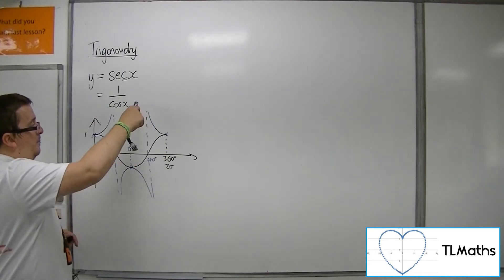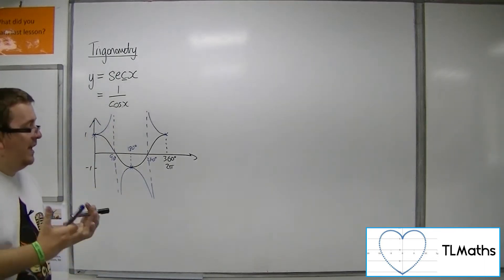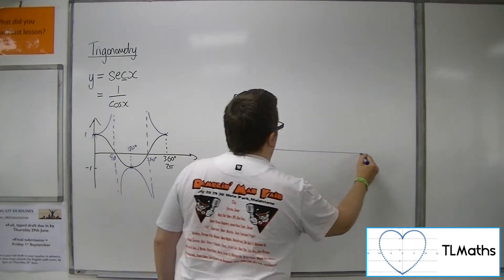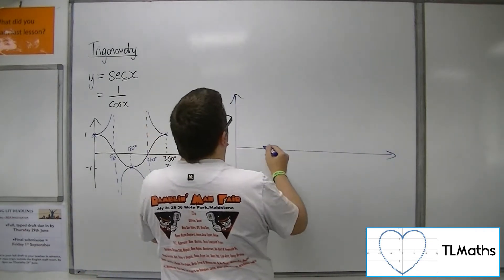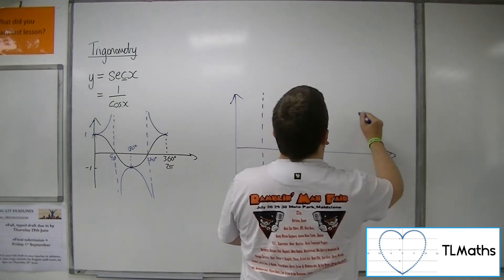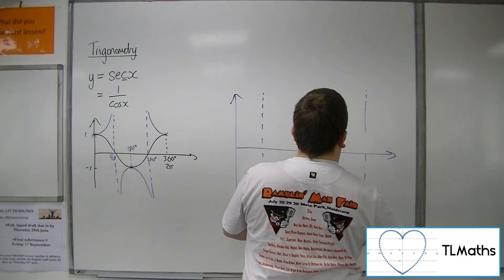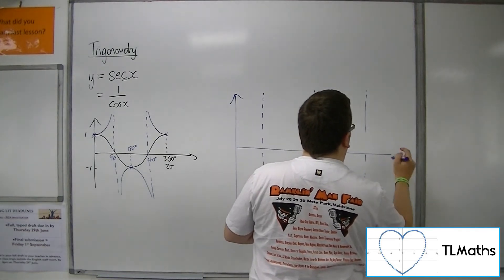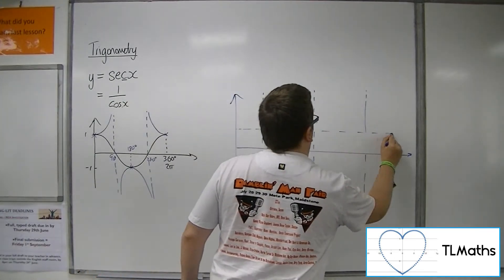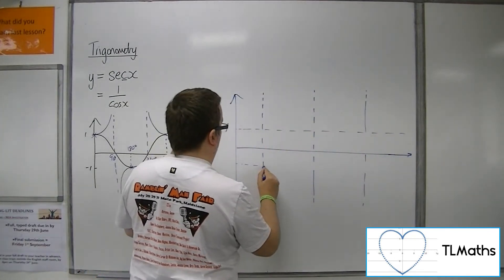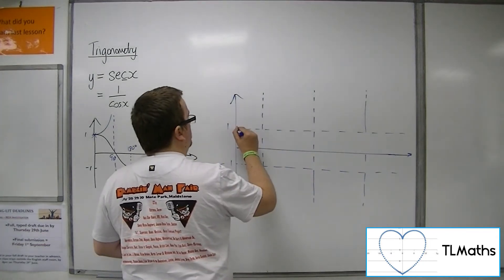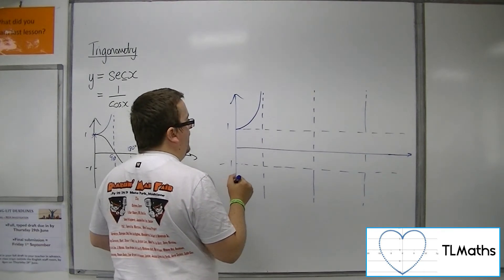The blue parts are what sec actually looks like. If we do sec from scratch, we're looking at something that looks like this. Let's put in 1 and minus 1. So the curve looks like that.